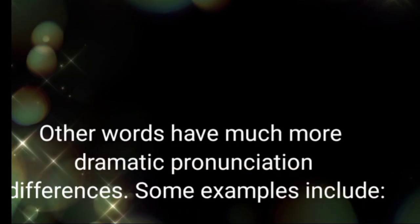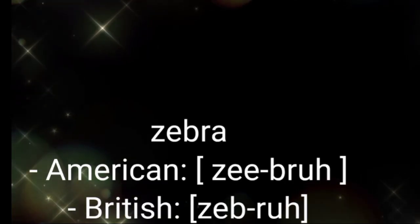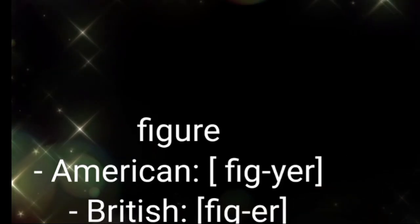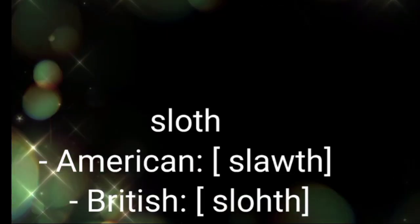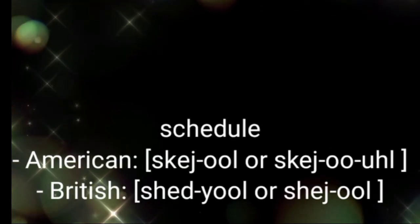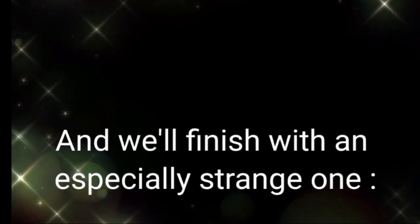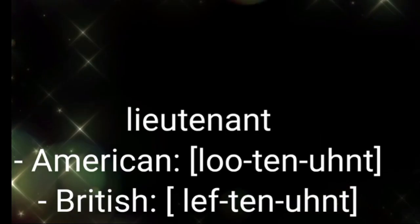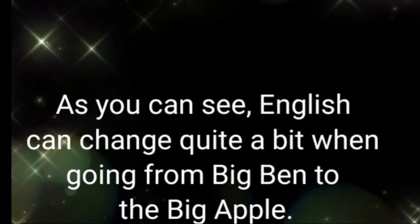Other words have much more dramatic pronunciation differences. Some examples include: zebra — 'zee-bra' (American) versus 'zeh-bra' (British); figure — 'fig-yer' (American) versus 'fig-ah' (British); sloth — 'slawth' (American) versus 'sloth' (British); schedule — 'sked-jool' or 'sked-yool' (American) versus 'shed-yool' or 'shale' (British). And finally an especially strange one: lieutenant — 'loo-ten-ant' (American) versus 'lef-ten-ant' (British). As you can see, English can change quite a bit when going from Big Ben to the Big Apple.